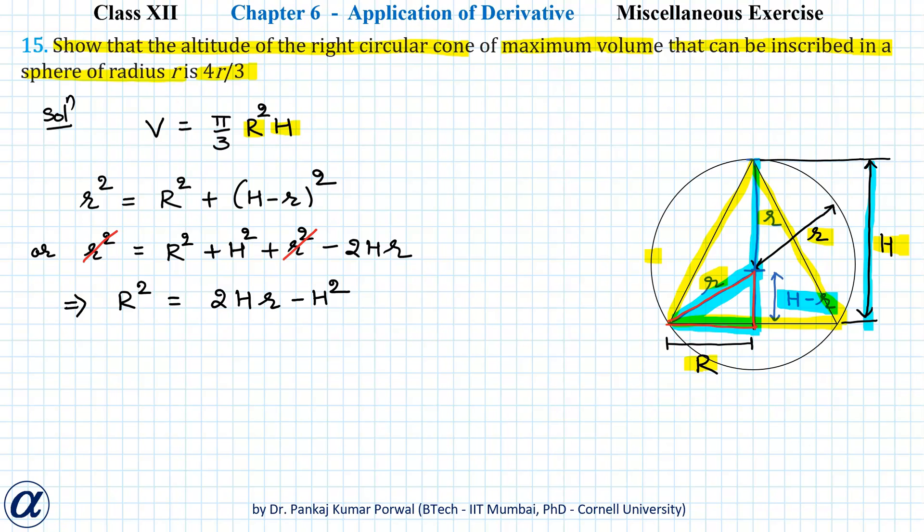So I can substitute R² in the equation for volume to get V = π/3(2Hr - H²)H. Here the sphere is given so we can treat this r as constant. So this gives me V = π/3(2H²r - H³).